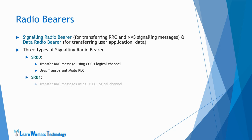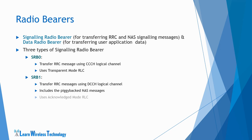Next is SRB1, which is used to transfer RRC messages using the DCCH logical channel. After the network receives the initial RRC request message over SRB0, it assigns SRB1 to the UE for transferring further RRC messages. SRB1 is also assigned a dedicated control logical channel. SRB1 also includes piggyback NAS messages until SRB2 is set up. SRB1 uses acknowledged mode RLC.